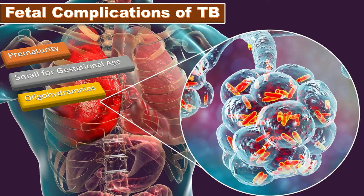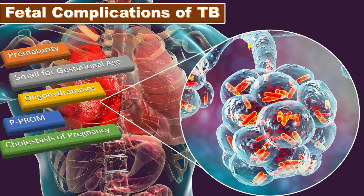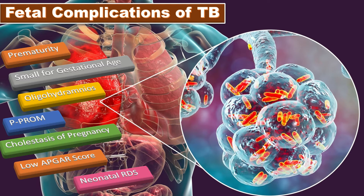Yadeo et al. found increased incidence of preterm premature rupture of membranes, cholestasis in pregnancy, low Apgar score of less than 8, and significant differences in neonatal respiratory distress syndrome — 13.3% versus 1.67% — in pregnant women with extra-pulmonary tuberculosis.